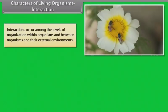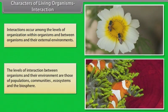Interactions occur among the levels of organization within organisms and between organisms and their external environments. The levels of interaction between organisms and their environment are those of populations, communities, ecosystems and the biosphere.